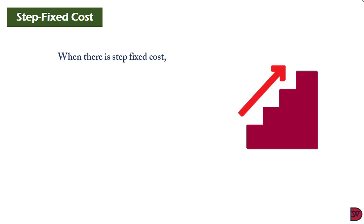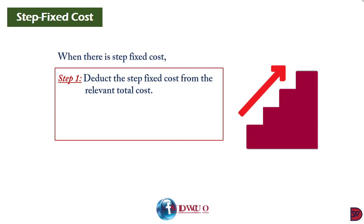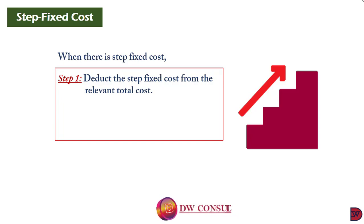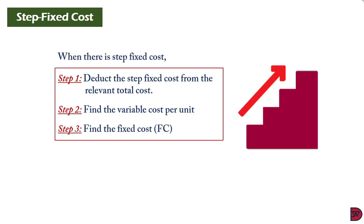When there is a step fixed cost, you deduct the step fixed cost from the relevant total cost. When the highest activity level exceeds the production level that triggers the step fixed cost, deduct that extra cost from the total cost at the highest activity level. Then proceed through the earlier steps: find the variable cost per unit, find the fixed cost, and work out any output level required.